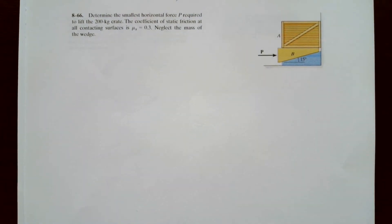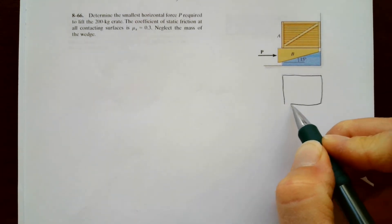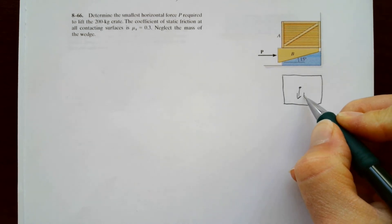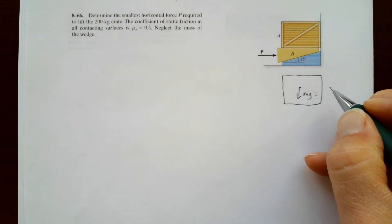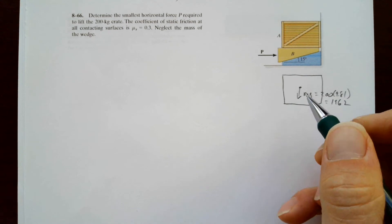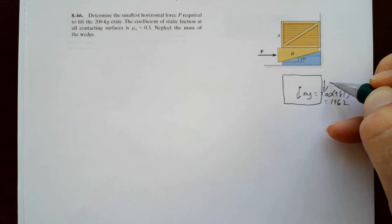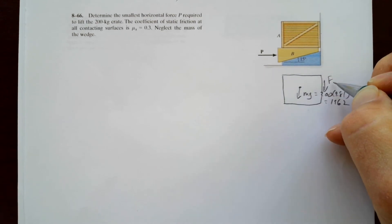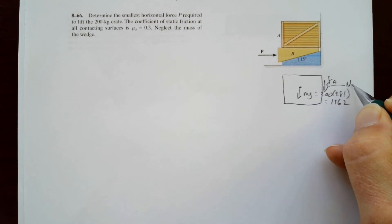Let's draw a free body diagram of the crate. It's going to have mg down, which is 200 kilograms times 9.81, which equals 1962. Now, if it's pushed up against the wall, then the force of friction down. And we'll call that, it's called A, plot point A. So force of friction A, and then we have the normal force A.